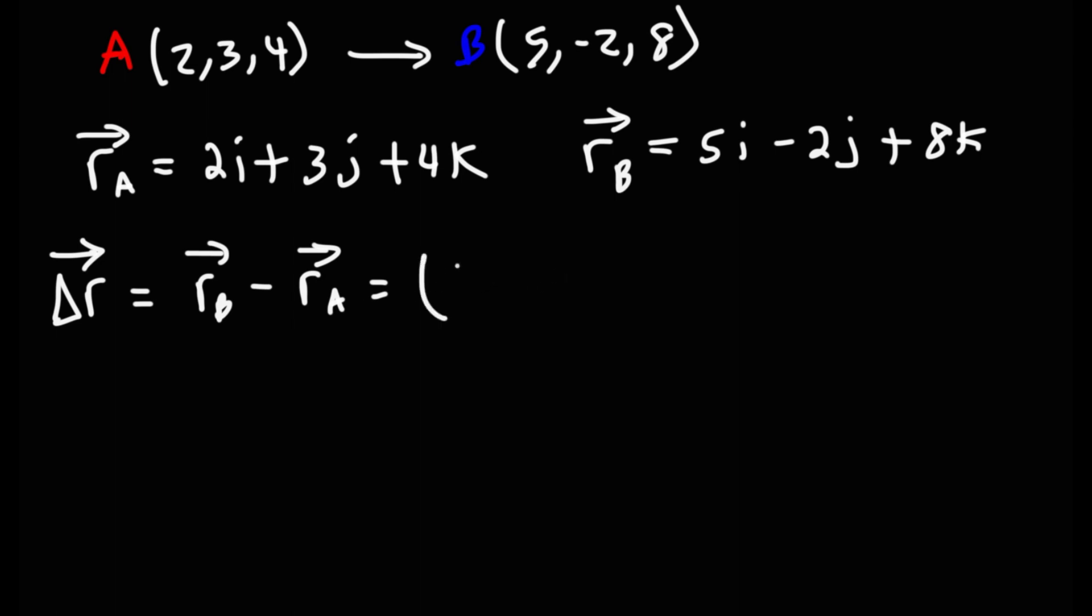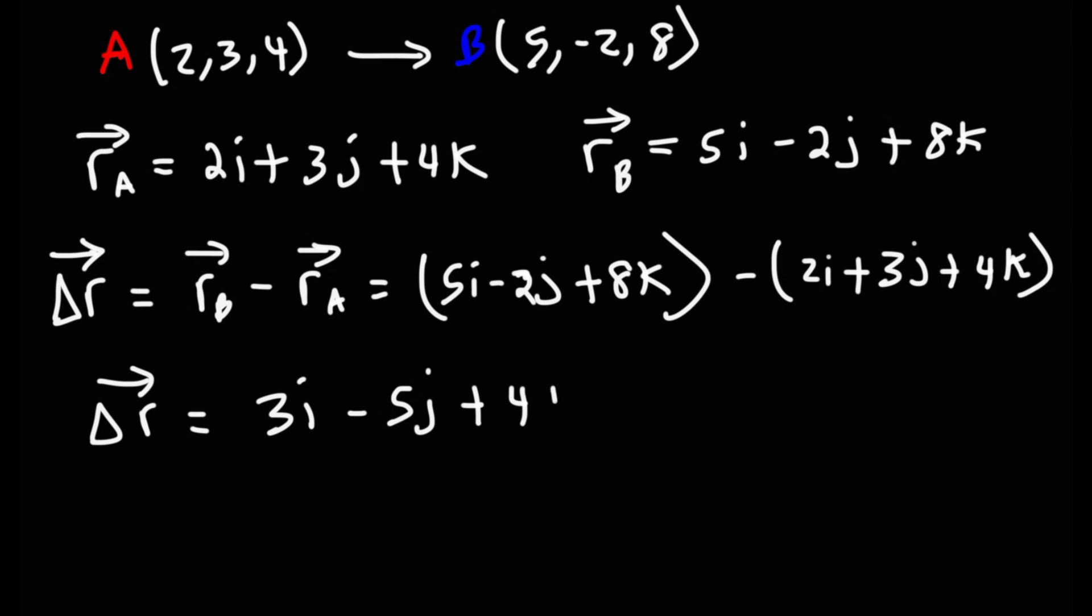So I'm going to write it out. So we have 5i minus 2j plus 8k, and then minus 2i plus 3j plus 4k. 5i minus 2i is going to be 3i. Negative 2j minus 3j, that's negative 5j. 8k minus 4k, that's going to be positive 4k.